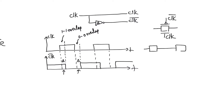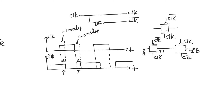Assume we have two transmission gates connected in series with opposite controls: if the first has clock and clock bar, the second has clock bar and clock. These two transmission gates should never be on together — that is the idealistic situation. There should never be a direct path between nodes A and B. However, during the 1-1 overlap period, the NMOS of the first transmission gate is on because clock equals 1, and the NMOS of the second is also on because clock bar equals 1. So there is a direct path through the NMOSs between A and B when there shouldn't be by design.